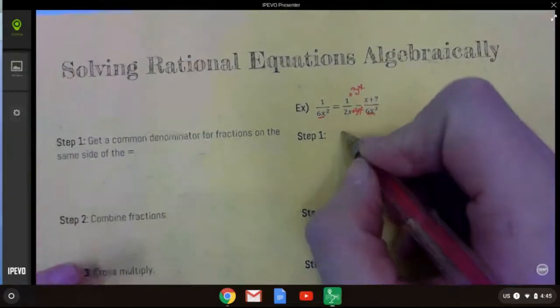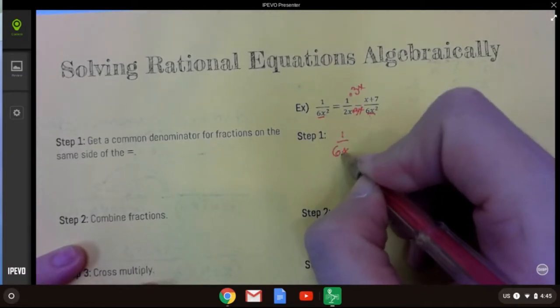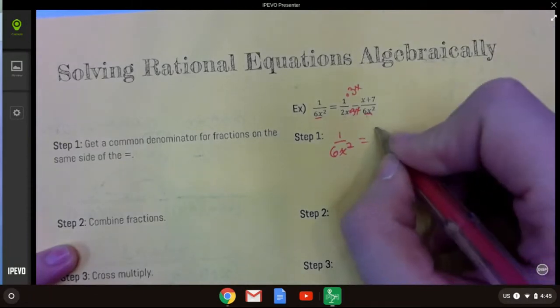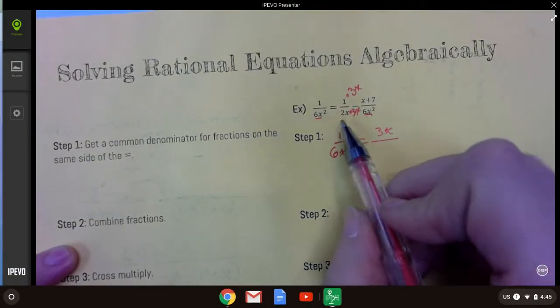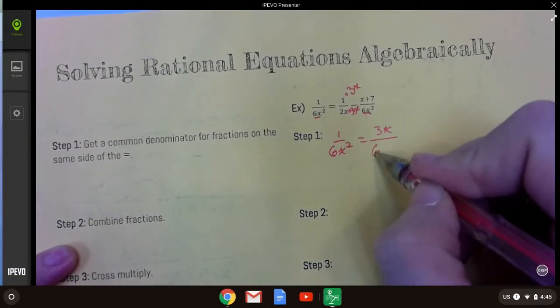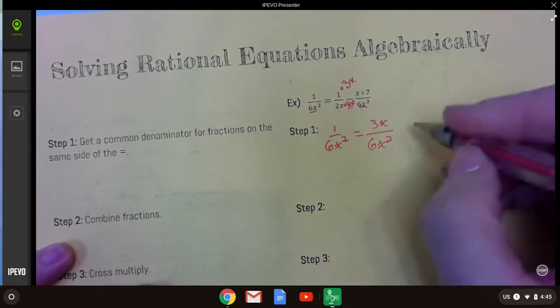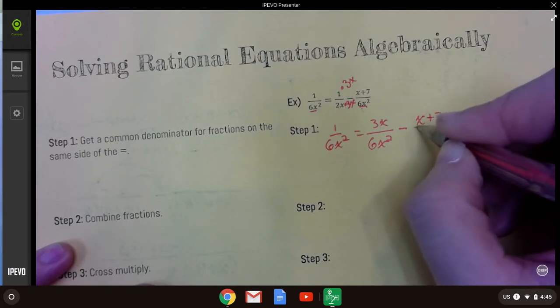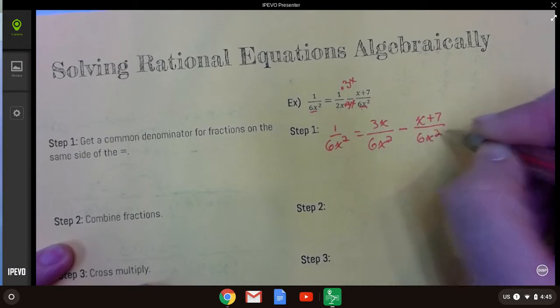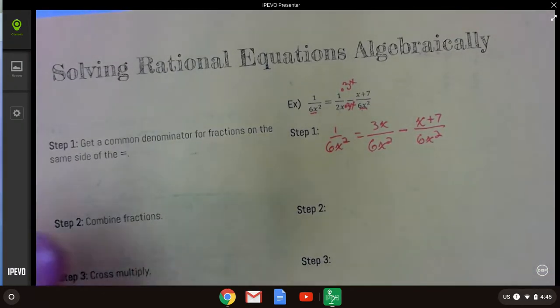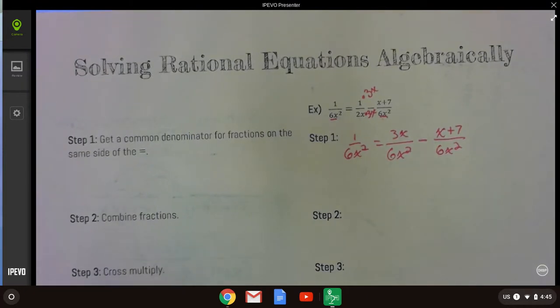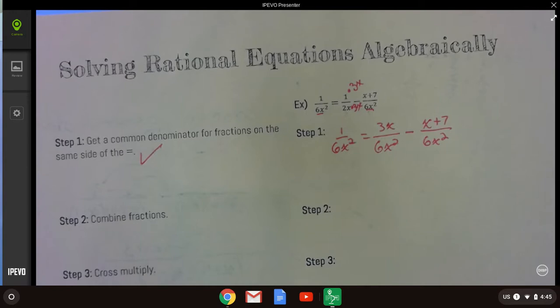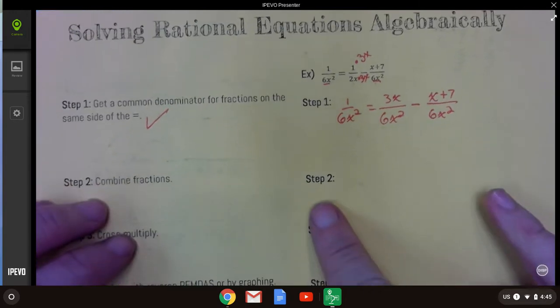So, get a common denominator. I got 1 over 6x squared equals 1 times 3x is 3x. And then 2x times 3x is 6x squared, which is what I wanted. I wanted the same denominator, minus x plus 7 over 6x squared. Okay, so common denominator. Woohoo! Got it.